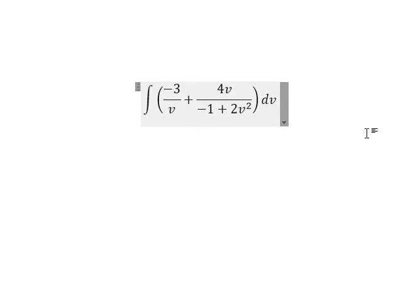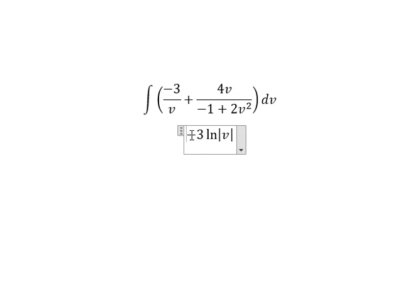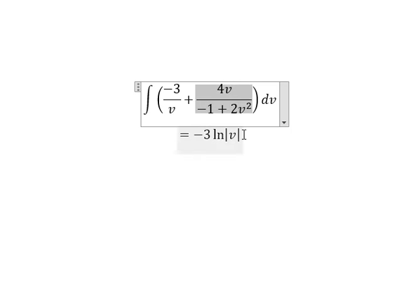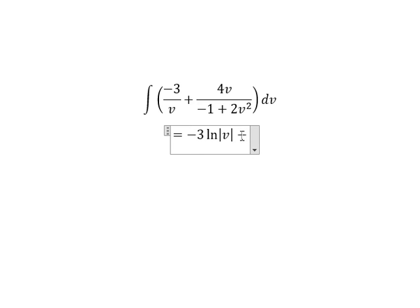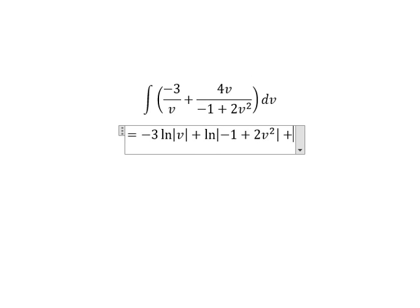Now we have the final answer for the partial fractions. The integration gives us negative 3 times LN of the absolute value of V, plus LN of the absolute value of negative 1 plus 2V squared, with constant C. A equals to negative 4 here.